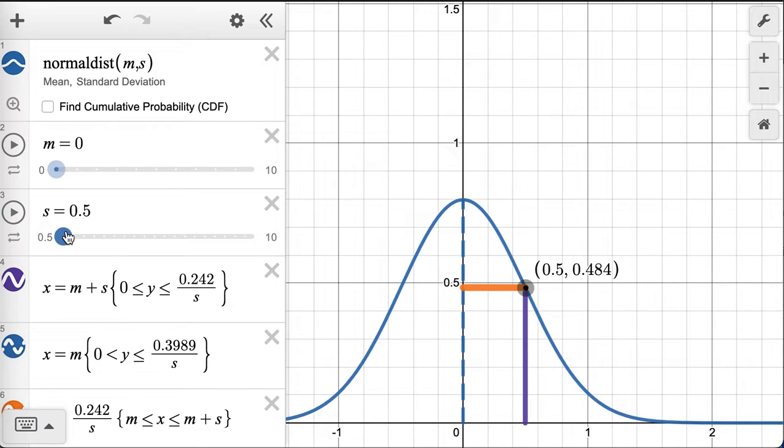You'll notice the curve goes up and gets narrower. My standard deviation is now 0.5, the distance from the middle to the inflection point. The orange horizontal line is still the standard deviation.